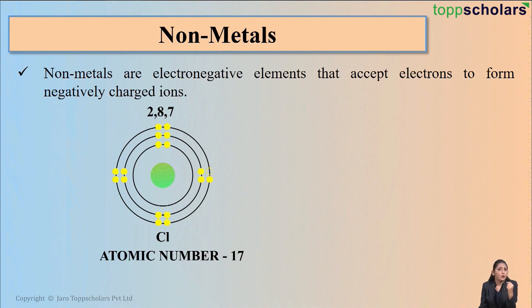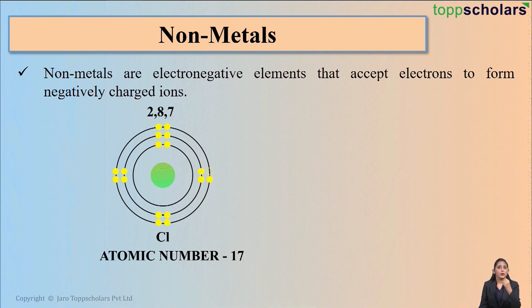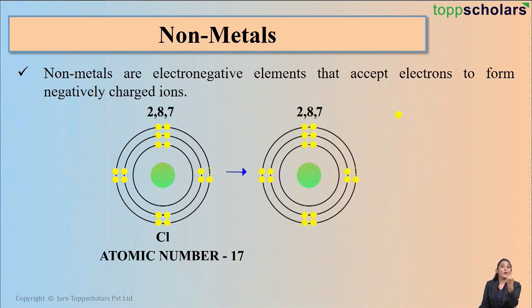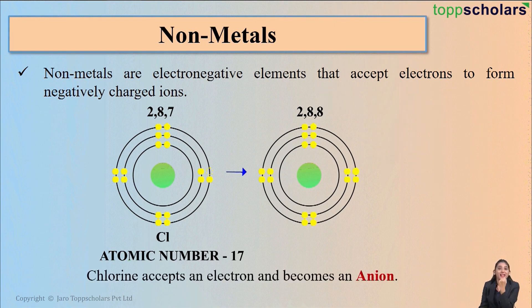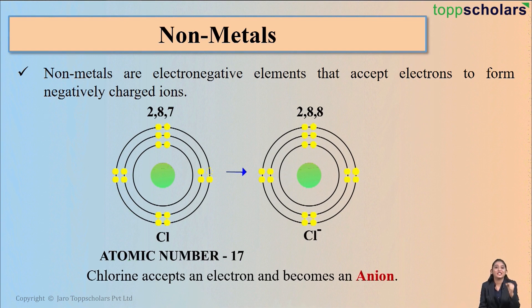In order to become stable, chlorine needs one more electron. So, in order to complete its octet, what does chlorine do? Chlorine accepts one electron. When chlorine accepts one electron, it gets converted into a negatively charged chloride ion. That is, it forms an anion.